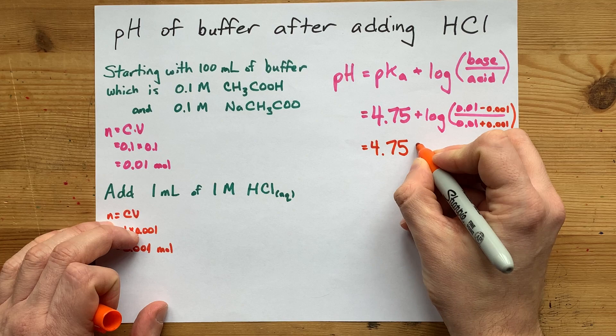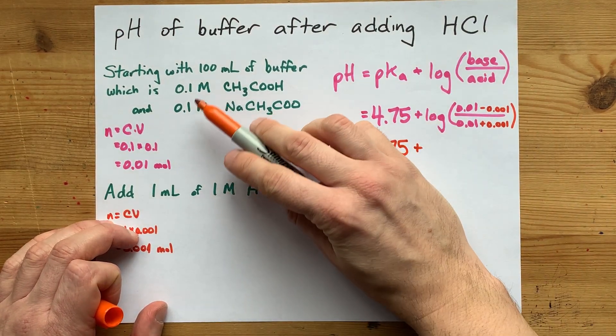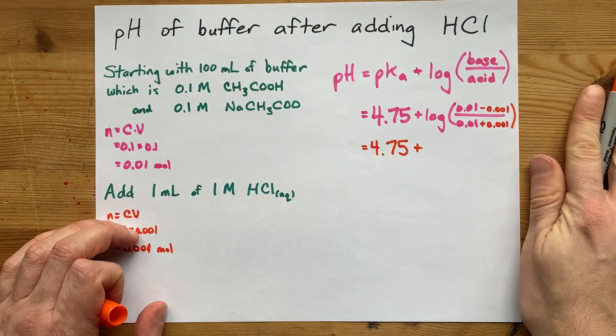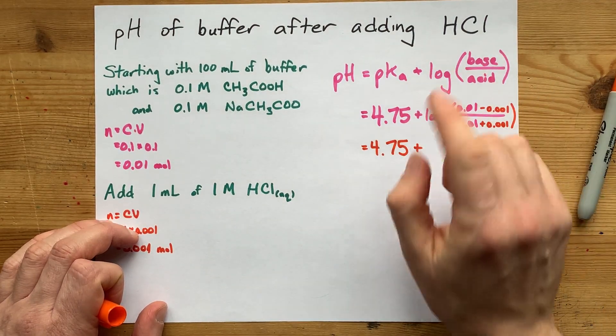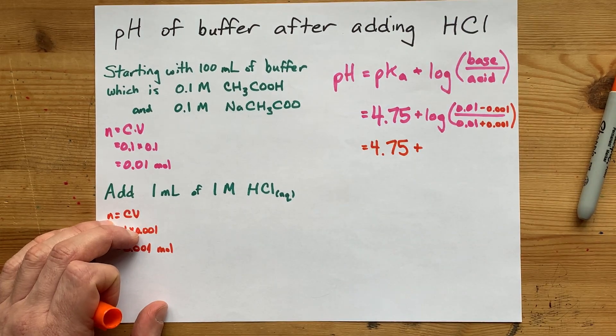So how much is this pH perturbed by? Well, by the way, because I started with the same concentration of acid and base when I started before I added the HCl, my pH equaled the pKa. It was 4.75.